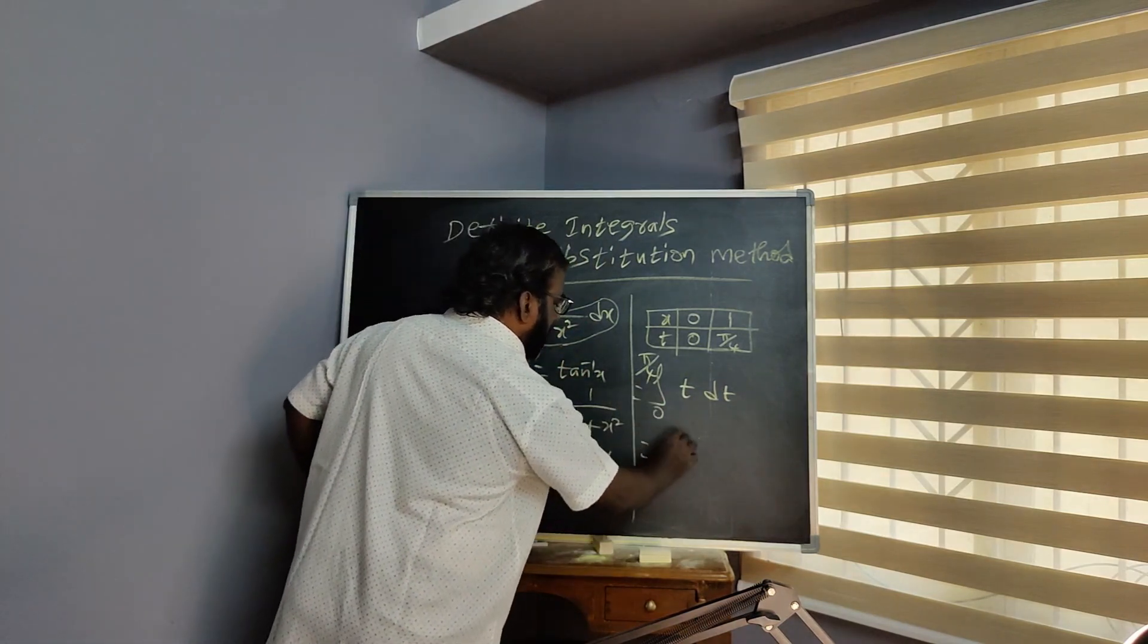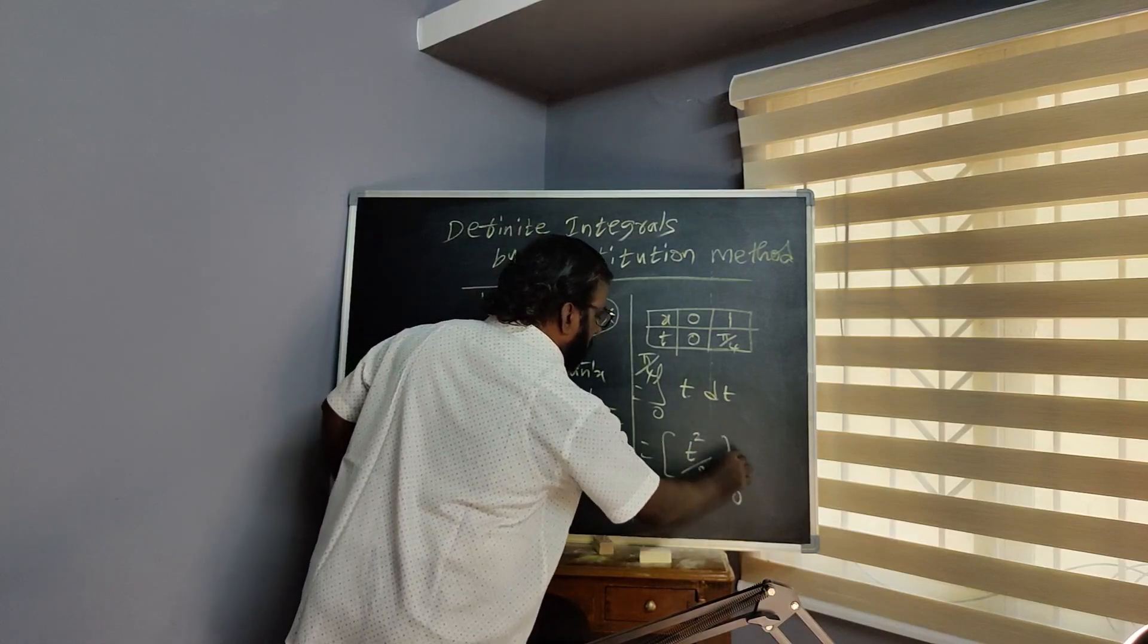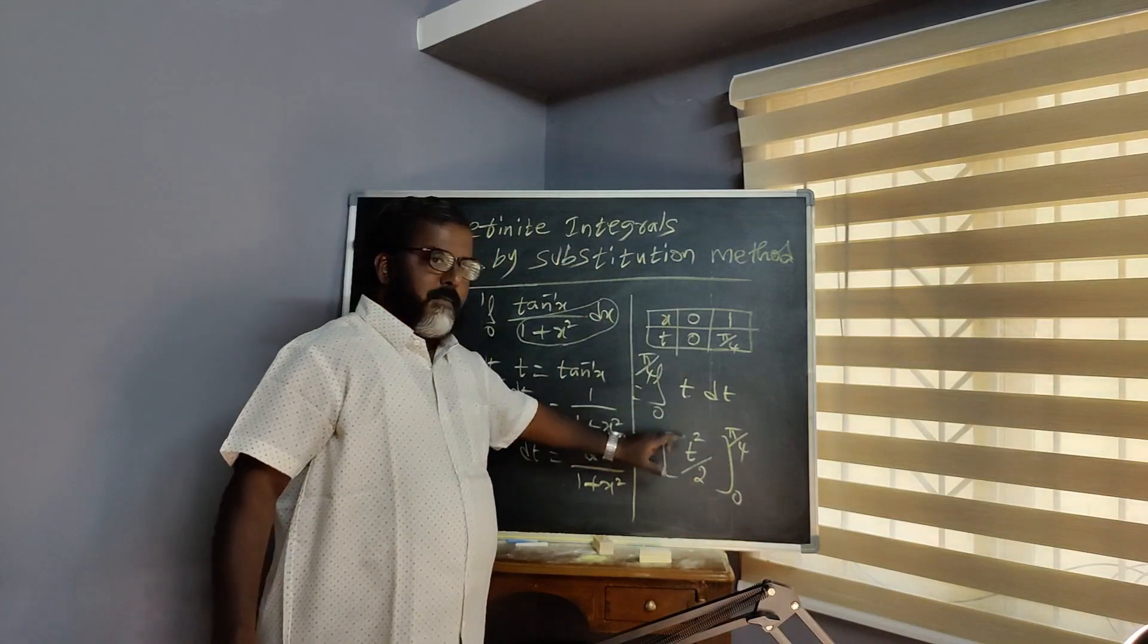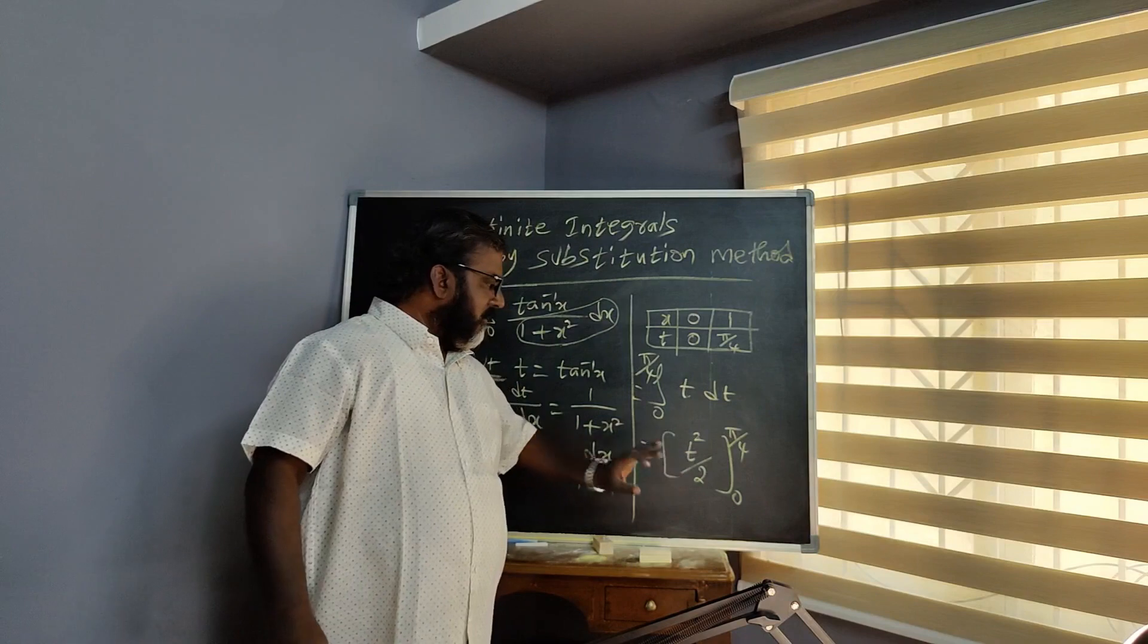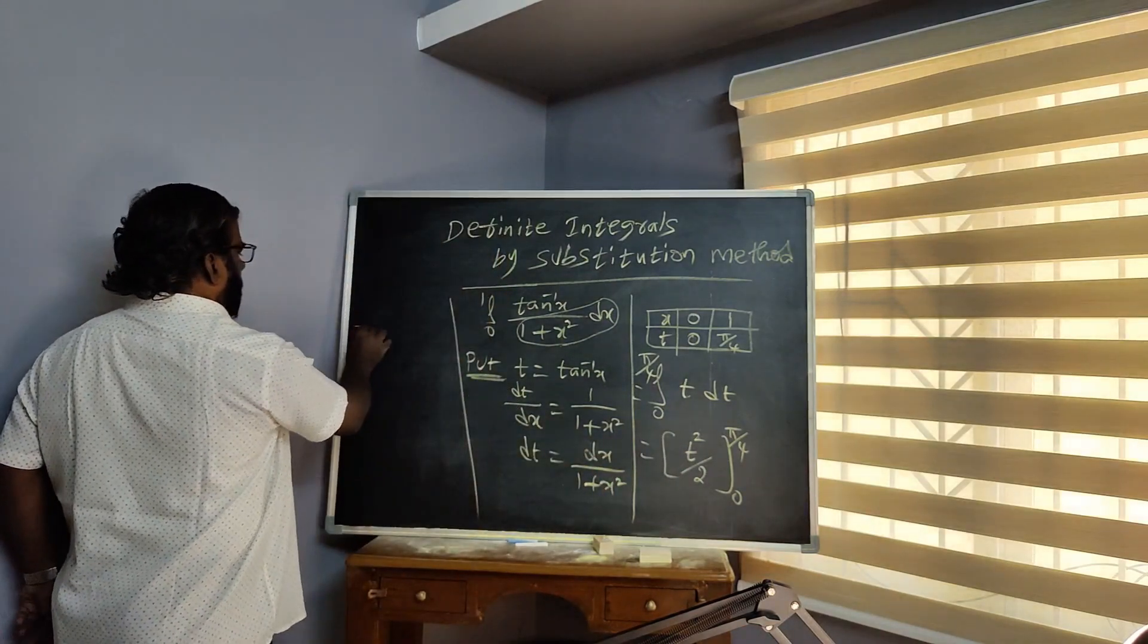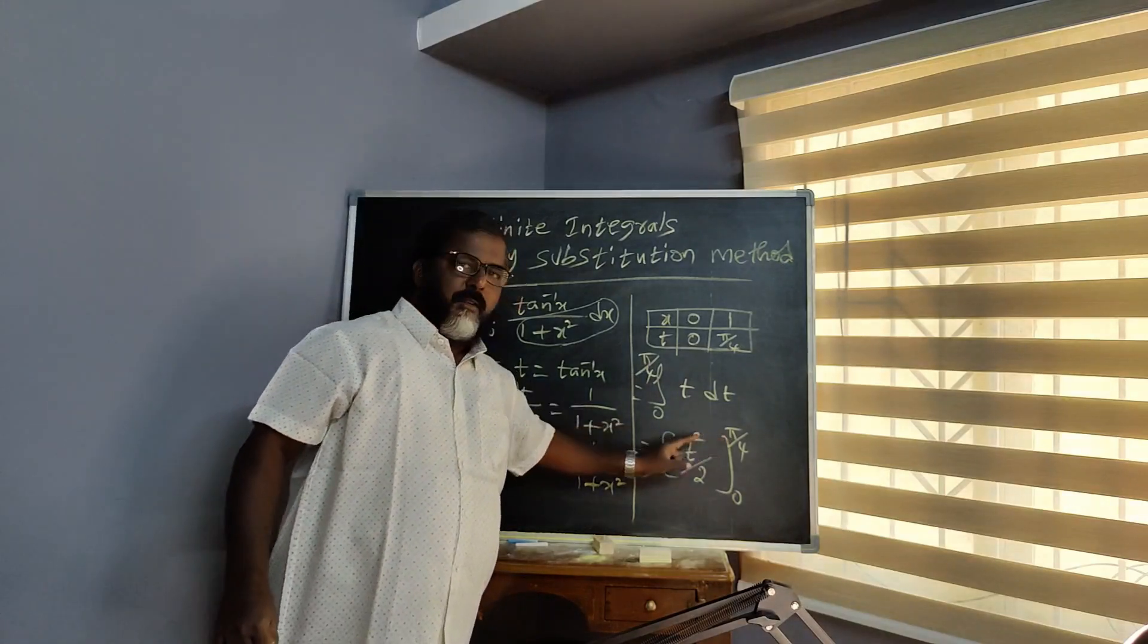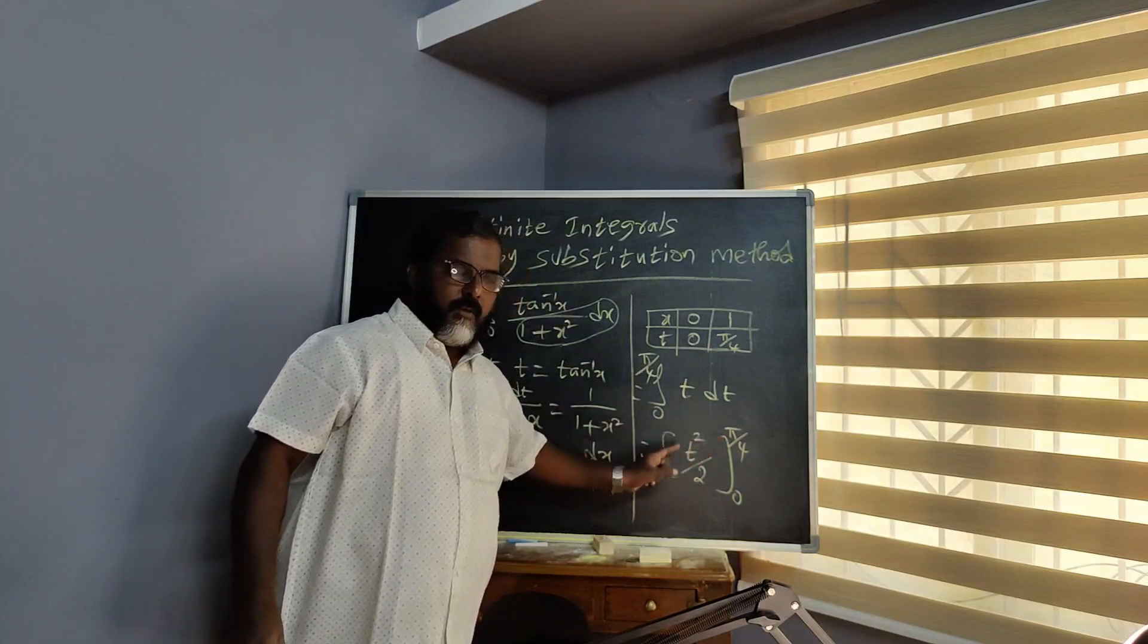Integrating T: T integrated is T square by 2, limits 0 to pi by 4. Power n plus 1 divided by n plus 1. Now substituting the limits.